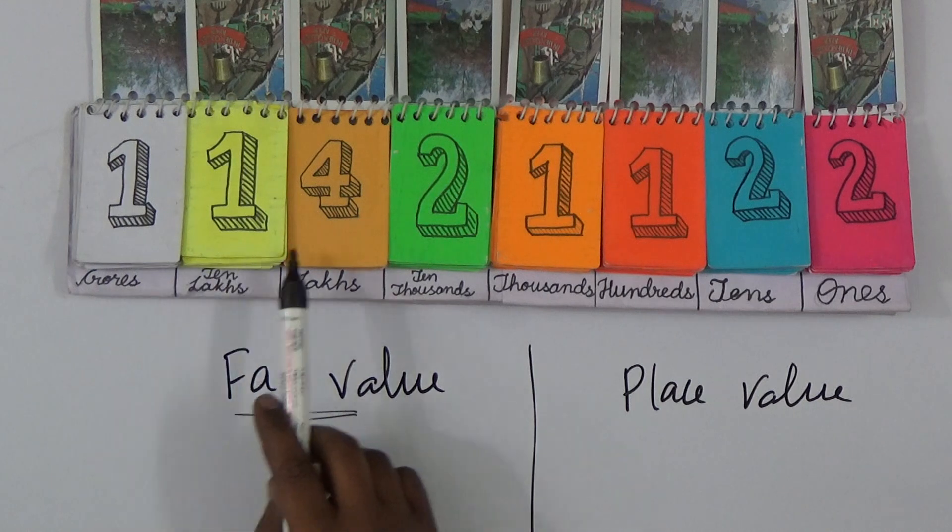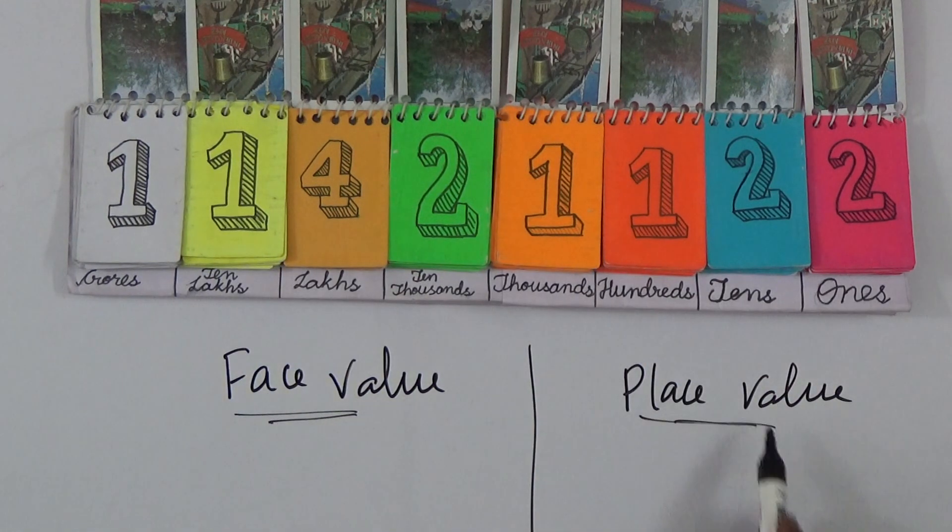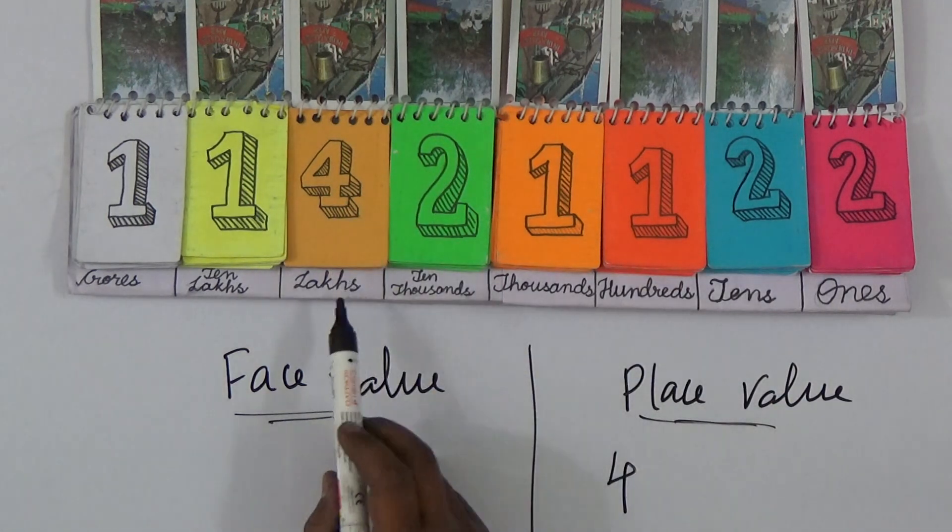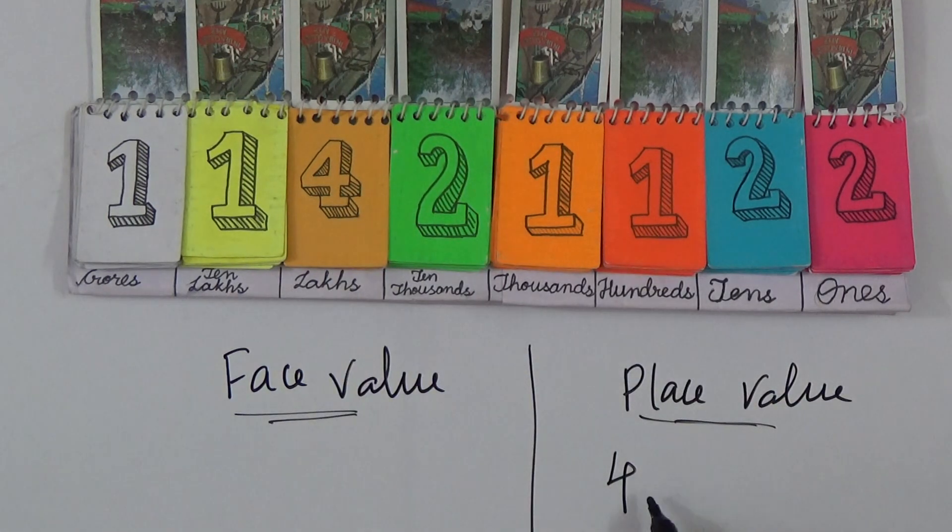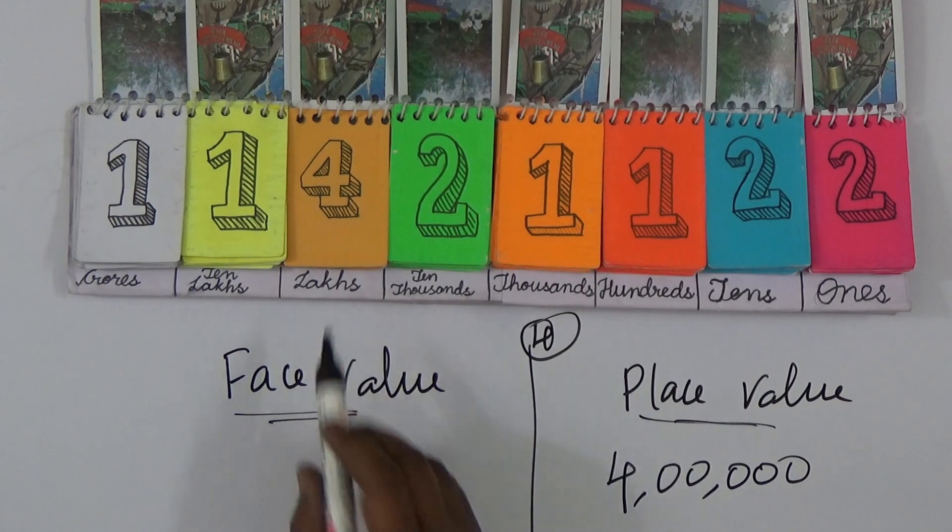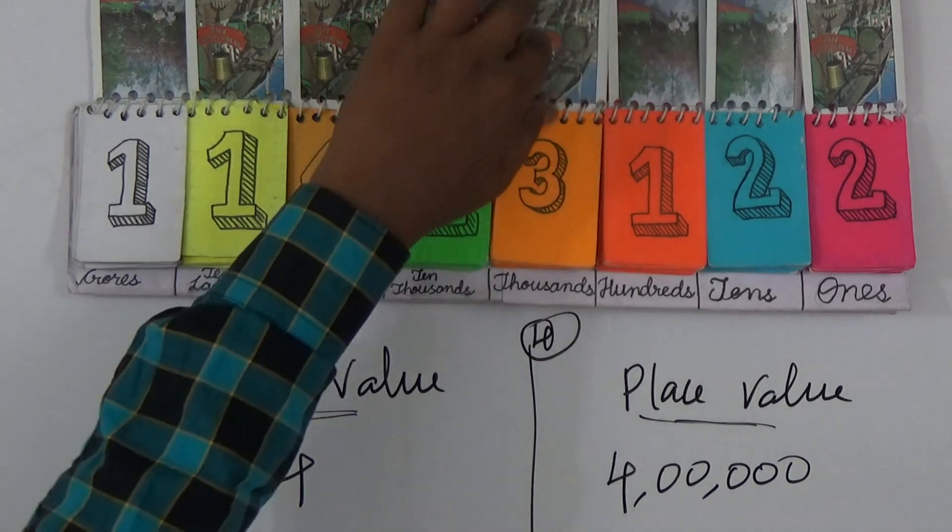In this, the place value of 2 - if you take place value of the 4, one two three four five six, so this place value of 4 is lakhs, that is 4 lakhs itself. In this number only number 4, and face value means the value itself, so the 4 itself is the place value. You can take some more numbers in different ways.